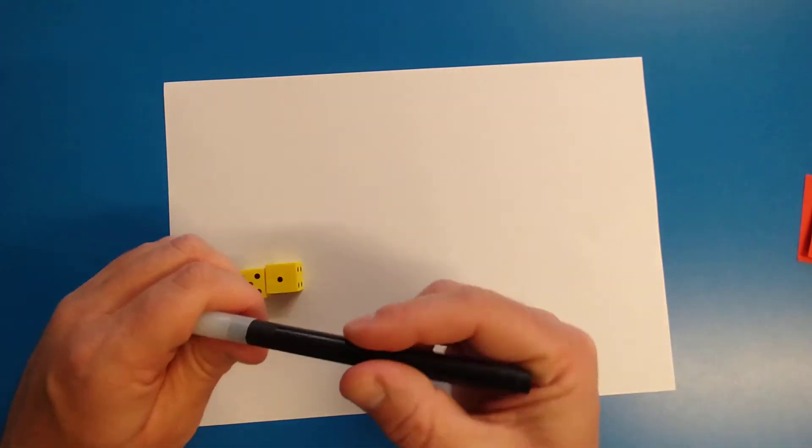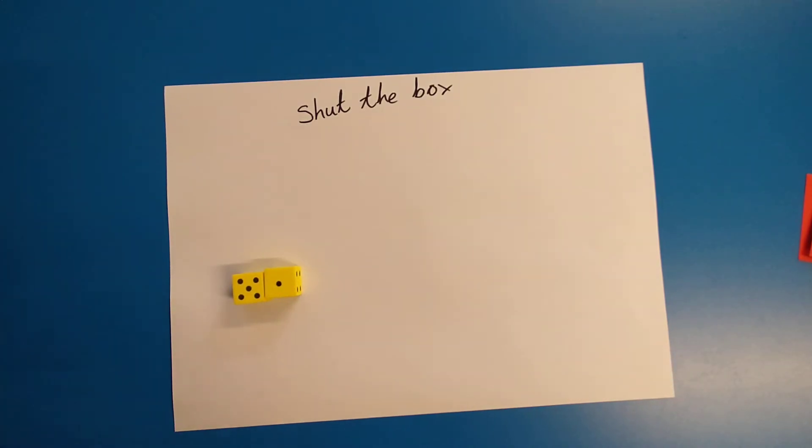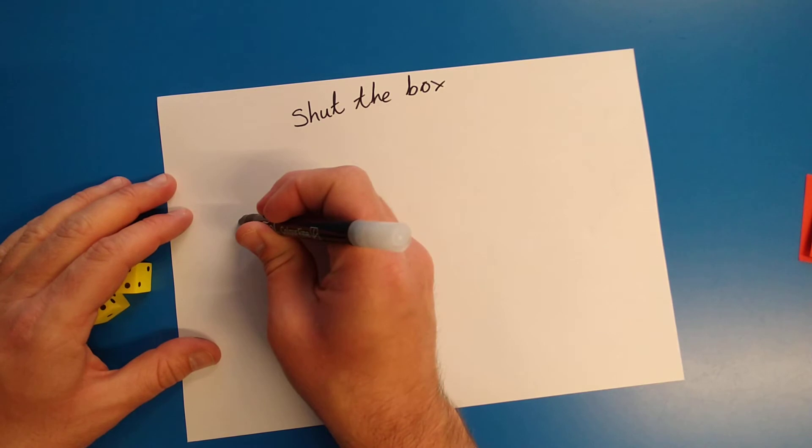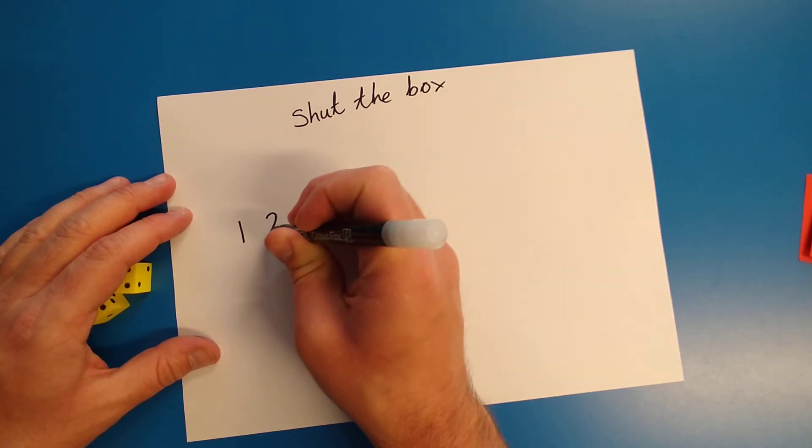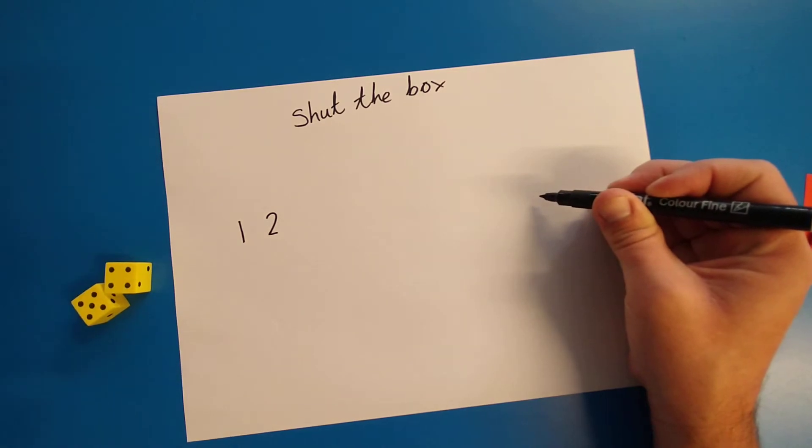With your dice, we're going to be playing a game called Shut the Box. Shut the Box is a really old-fashioned game that people used to play in the pub, and what there is, is you've got the numbers from one, two, all the way up to 12, like that.